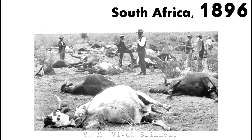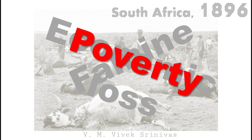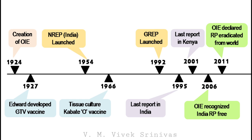These animal deaths led to severe economic losses, famine, and poverty, which were indirectly responsible for countless cattle farmers' deaths. These are some of the important historical events and milestones in Rinderpest eradication.